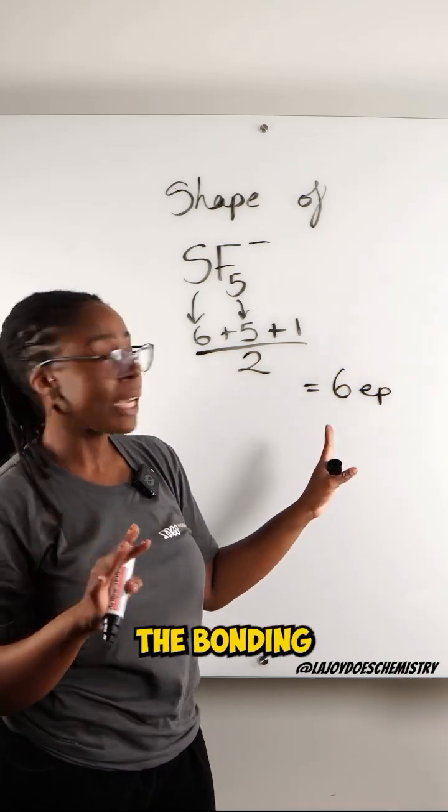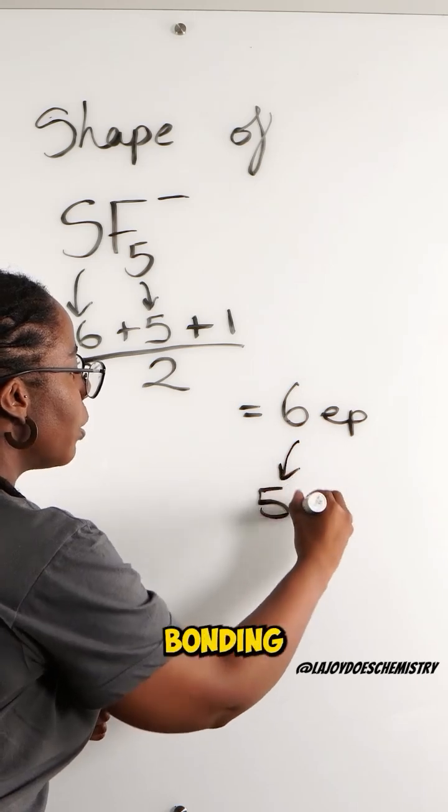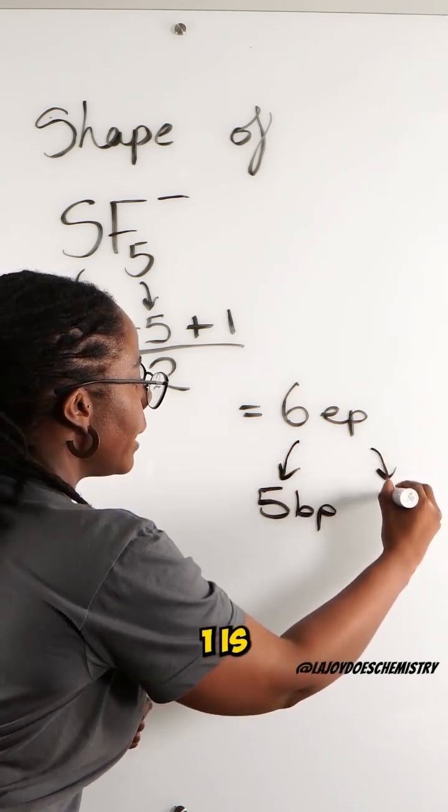Not all of these are involved in the bonding. There are only five fluorines which means that five are bonding pairs and then one is a lone pair.